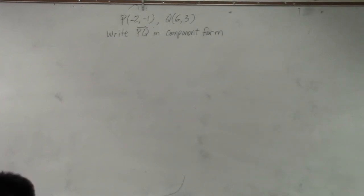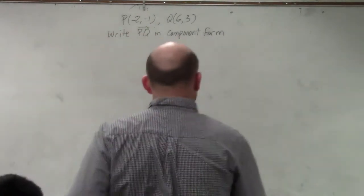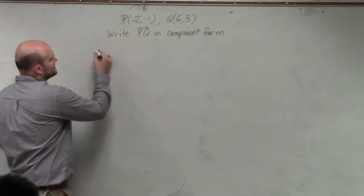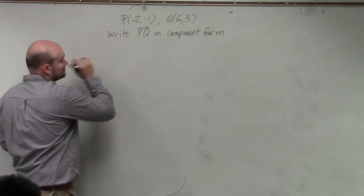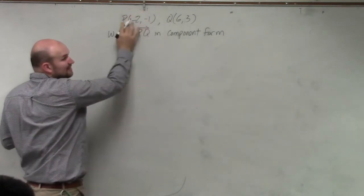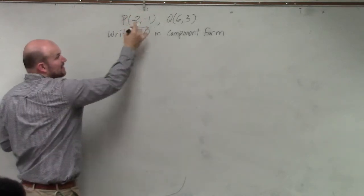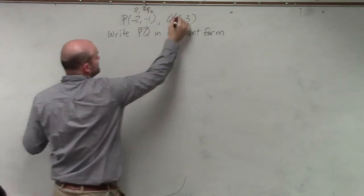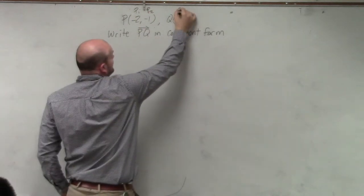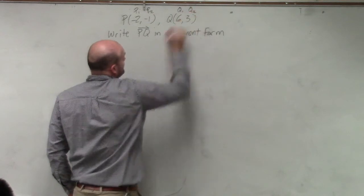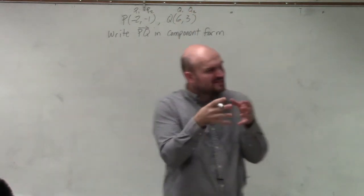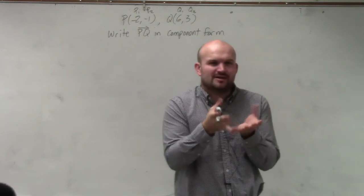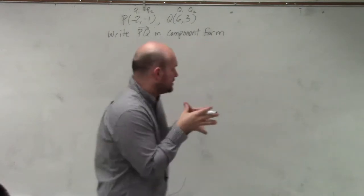So in writing in component form, the first thing I'm going to do is say each of these points has a component. I'm going to call this P1, and I'm going to call this P2, I'm going to call this Q1, and this Q2. So each of these points has their own components. You could think of them as their x and y values, but I'm just looking at them as their components.